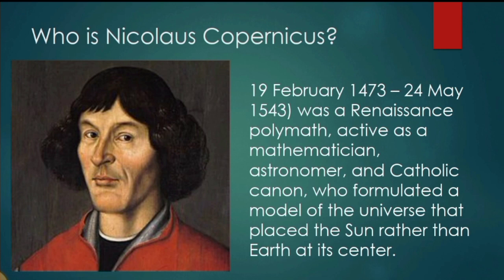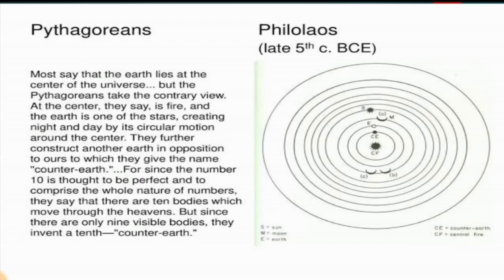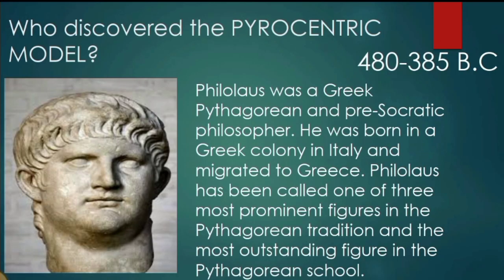Moving on, we have the pyrocentric model. The pyrocentric model of the universe replaced Earth as the center of the solar system with a central fire around which everything else revolved. As the name suggests, 'pyro' means fire and 'centric' pertaining to a center. The discoverer of the pyrocentric model is Philolaus, a Greek Pythagorean and pre-Socratic philosopher born in a Greek colony in Italy who later migrated to Greece.